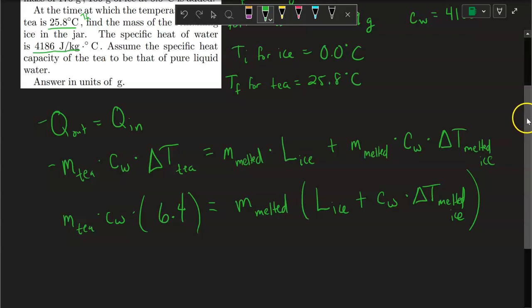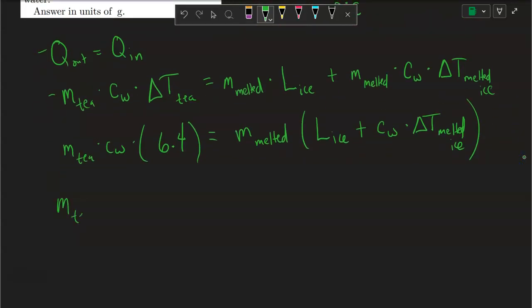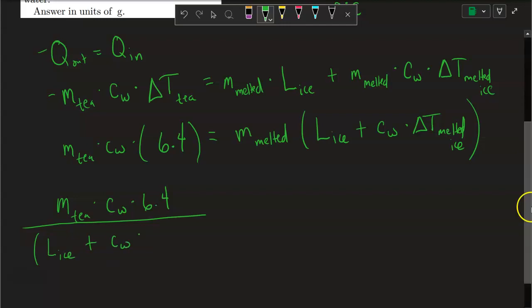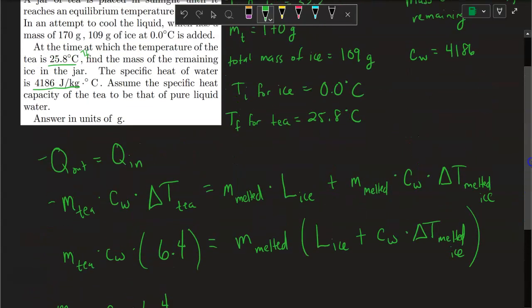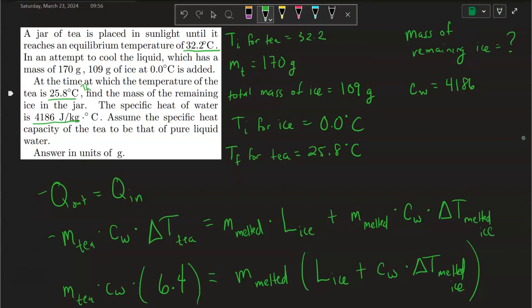To solve for the mass of the melted ice, take mass of the tea times the specific heat capacity of water — which is given — times the change in temperature for the tea, keeping it positive, then divide by the latent heat of fusion of ice plus the specific heat capacity of water times the change in temperature of the melted ice. The melted ice starts at 0 degrees, becomes liquid water, and its temperature increases up to 25.8 degrees — whatever your final temperature is — so the melted ice experiences a change in temperature of 25.8 degrees in my example.